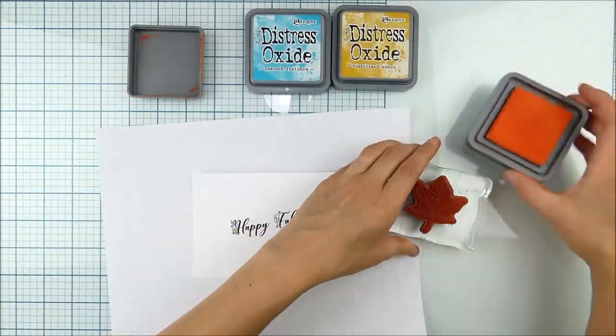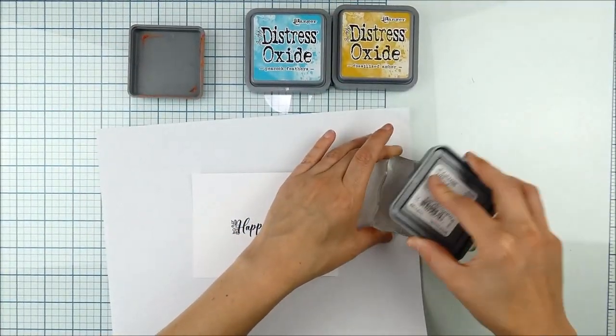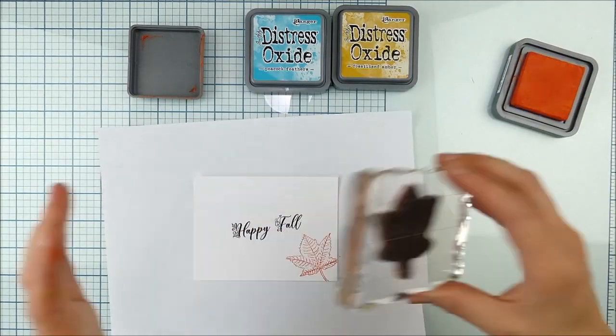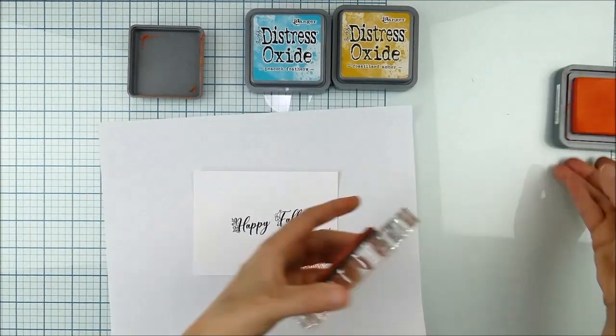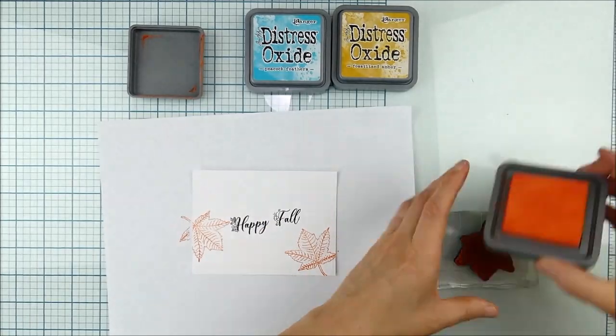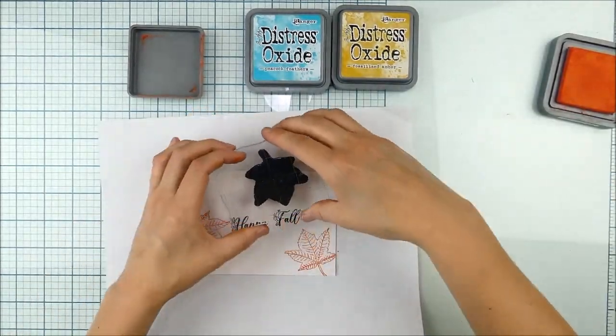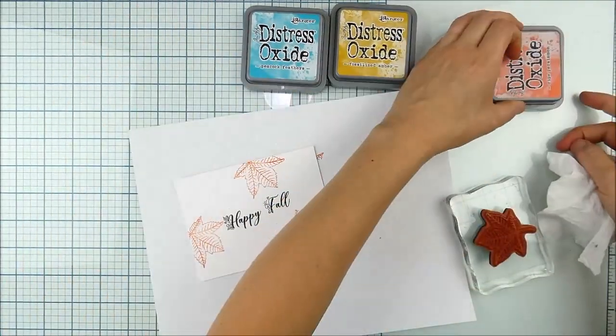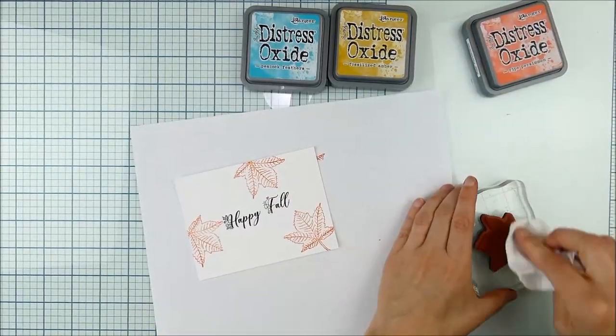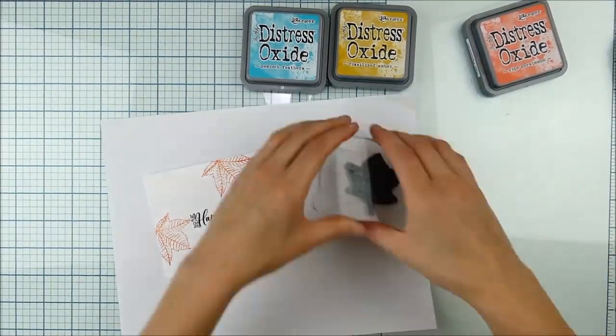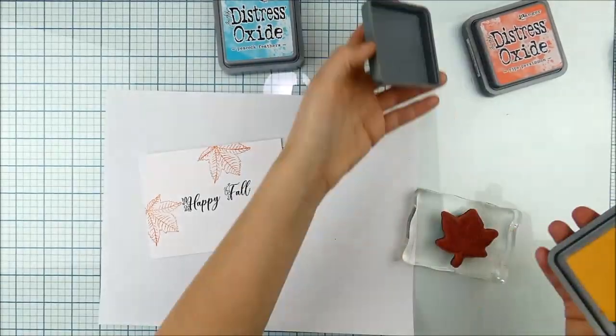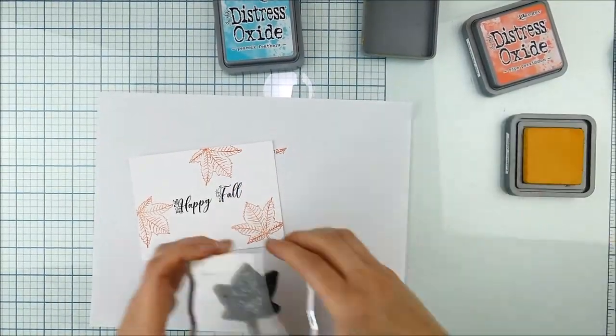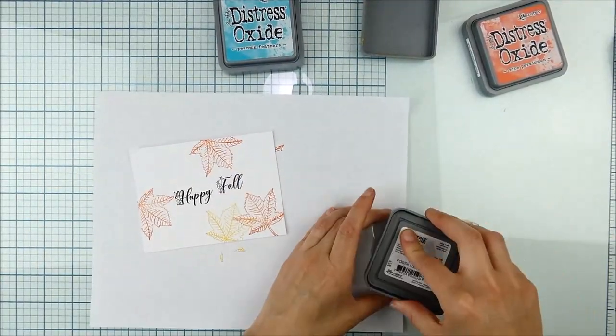All right, so I'm going to start off there with ripe persimmon and I'm just inking up my stamp. As you can see, just stamping around, this image stamps really beautifully. You could also do this on some watercolor paper and mist with water to get a soft watercolor effect. I just went with it on the white cardstock this time because I wanted clean and simple and I wanted to keep all that beautiful detail on this stamp.